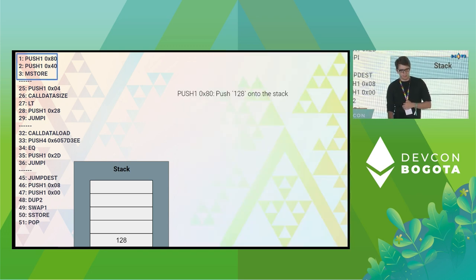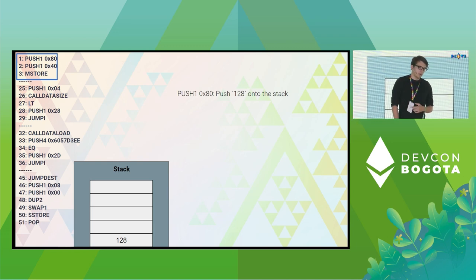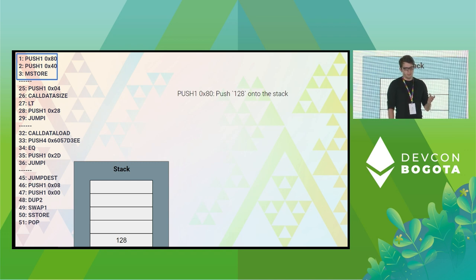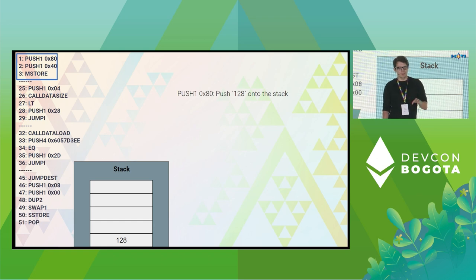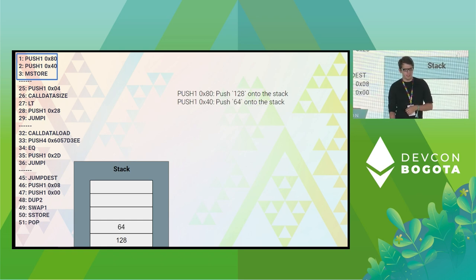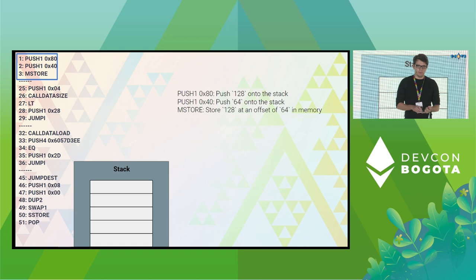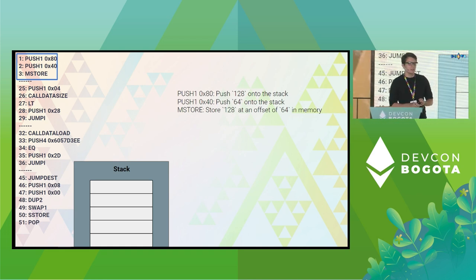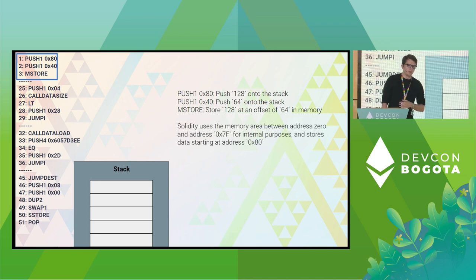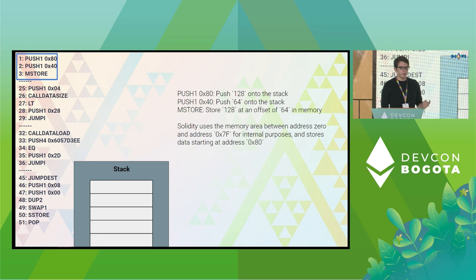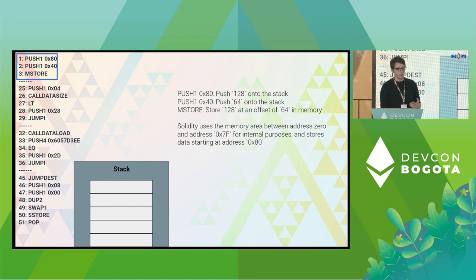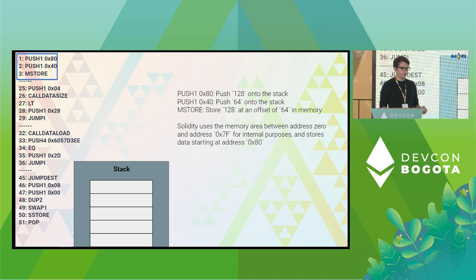Starting at the top: we have PUSH1 0x80, which pushes 128 onto the stack — 0x80 is the hexadecimal representation of 128. Then we push 64 onto the stack, and call MSTORE, which stores the value 128 at offset 64 in memory. What's going on here? Solidity uses the memory area between address 0 and 0x7F (127) for internal purposes, and stores data starting at address 0x80 (128). This is Solidity doing boilerplate internal memory management for us — a straight win we don't have to worry about as Solidity developers.